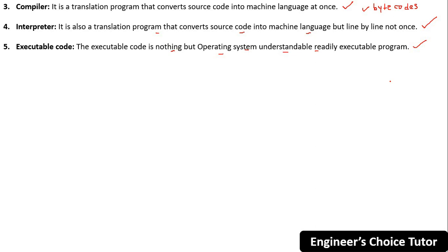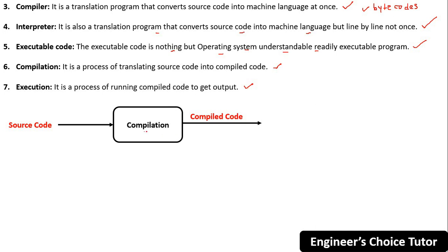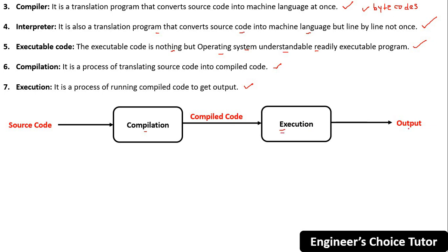There are two main processes: compilation and execution. The compilation process is the process of translating source code into compiled code. The execution process is the process of running compiled code to get the output. So the flow is: source code goes through compilation to produce compiled code, which then acts as input for the execution process to produce the output.